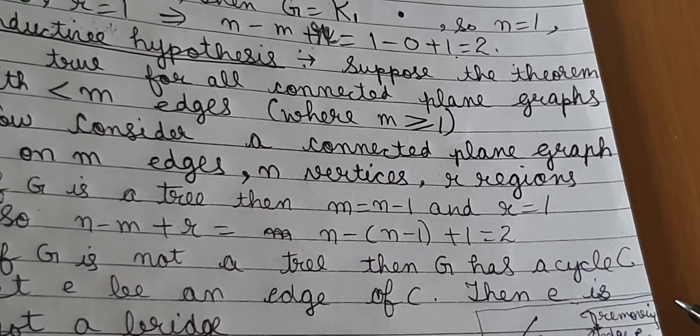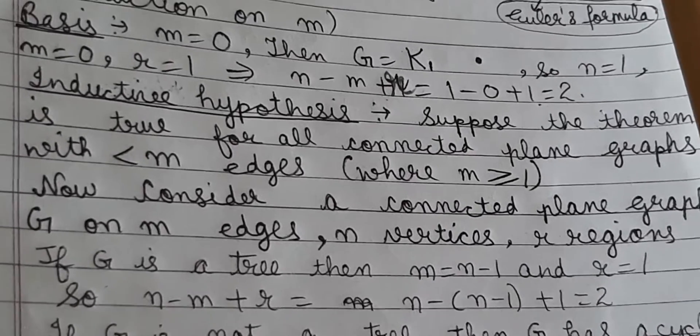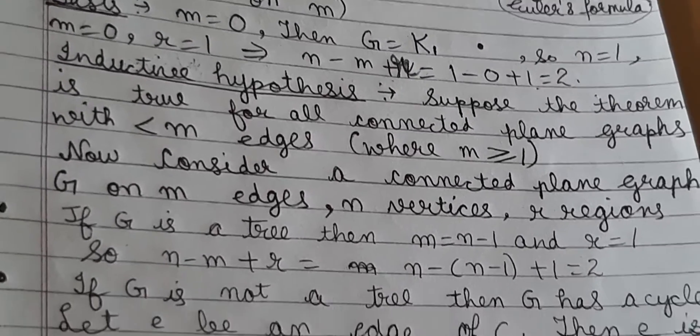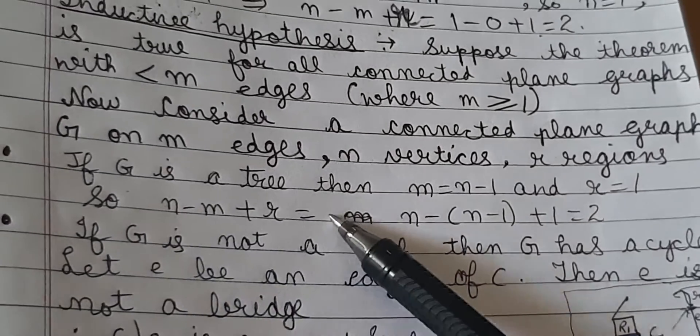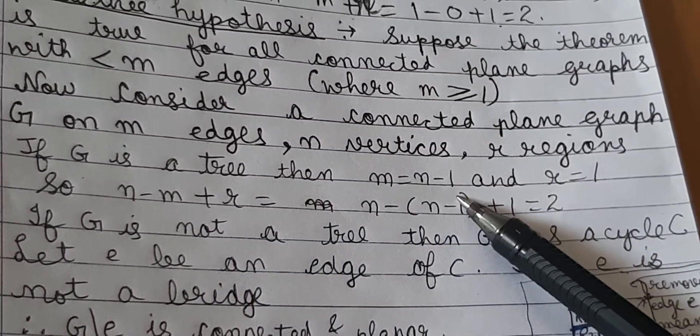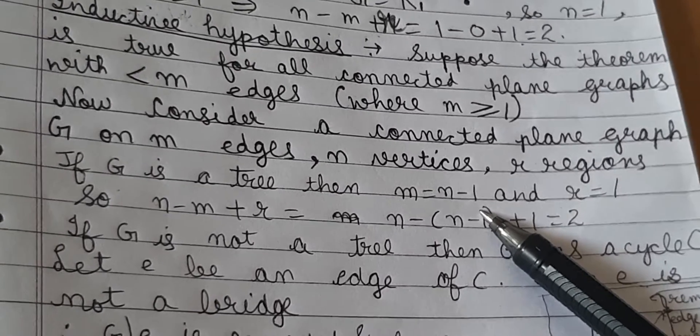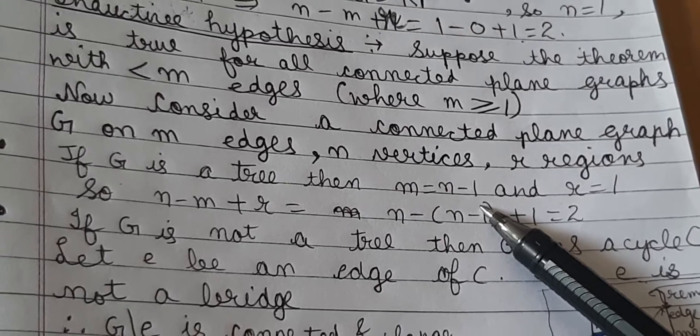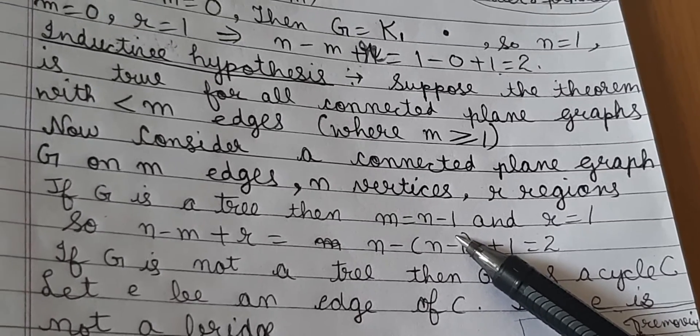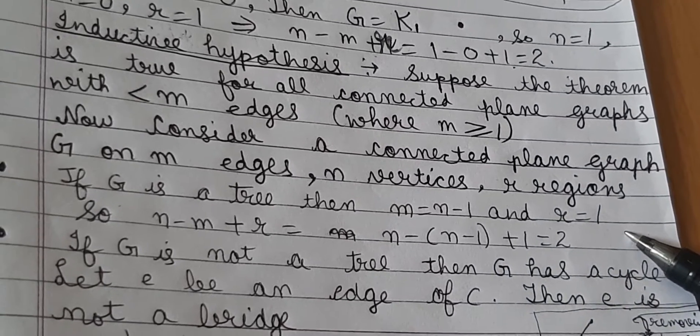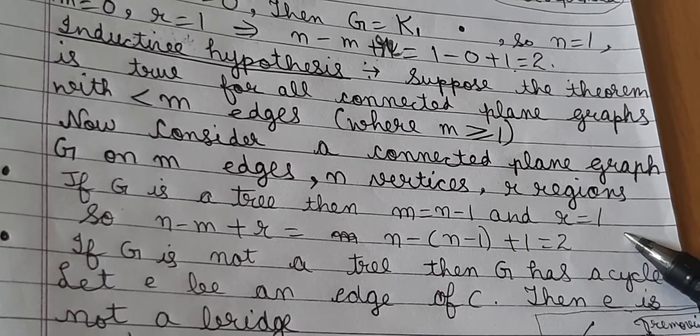Remember that a graph is a tree if it is connected and acyclic, that means it is connected and has no cycle. Our first case: if G is a tree, then m equals n minus 1, as we know this result. Now we know the number of edges we have.